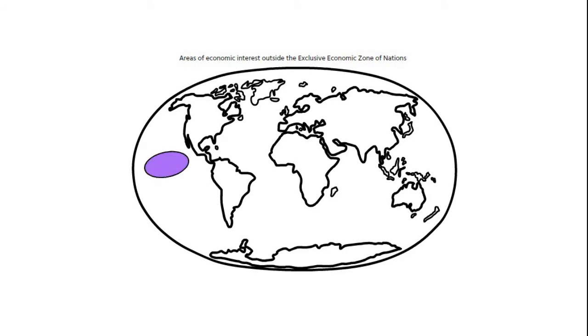This place is called Manganese Nodule Belt and it is roughly 9 million square kilometers big. That is approximately the size of whole Europe and lies between the Clarion and Klipperton Fracture Zone, often called CCZ.